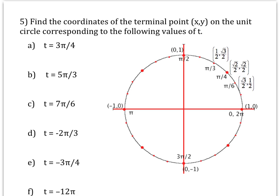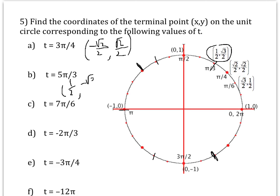Now we can use all of that to find points on the unit circle. For t = 3π/4, use π/4 as the reference — it's in the second quadrant, so x is negative: (−√2/2, √2/2). For t = 5π/3, the reference is π/3, and we're in the fourth quadrant: (1/2, −√3/2). For t = 7π/6, reference is π/6, third quadrant, both negative: (−√3/2, −1/2). For t = −2π/3, reference is π/3, third quadrant: (−1/2, −√3/2).